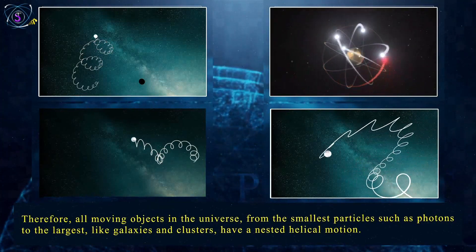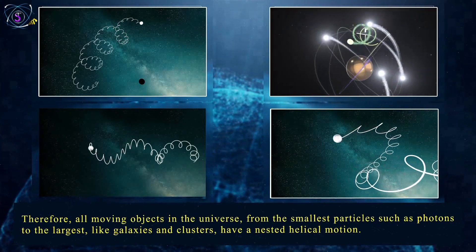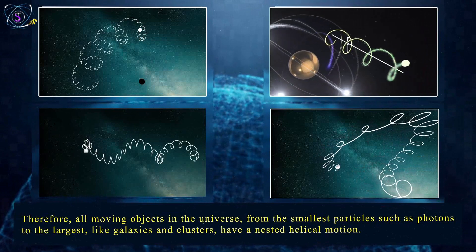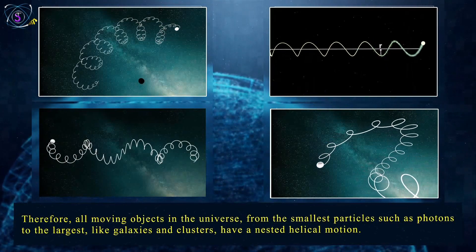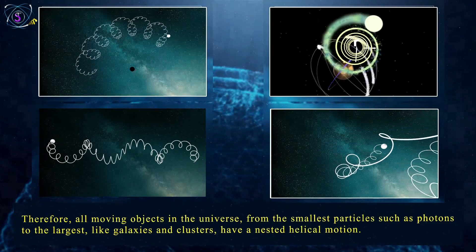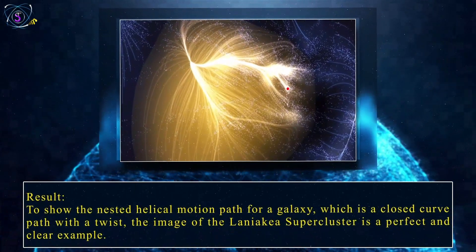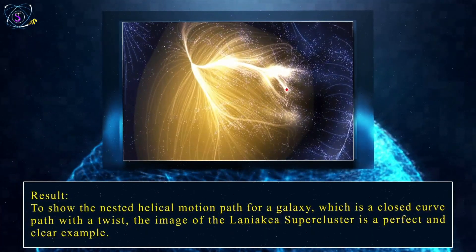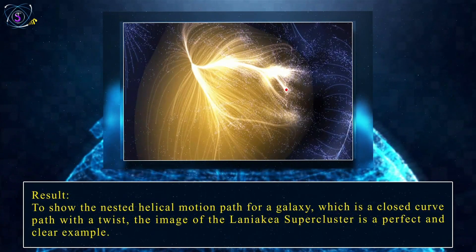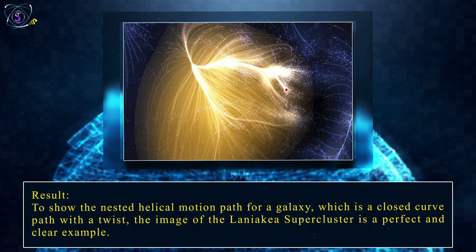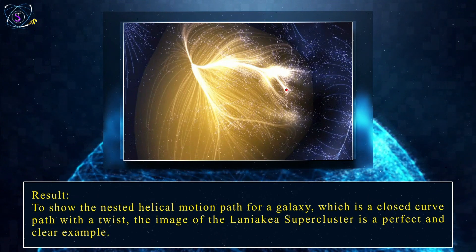Therefore, all moving objects in the universe — from the smallest particles such as photons to the largest galaxies and clusters — have a nested helical motion. To show the nested helical motion path for a galaxy, which is a closed-curved path with a twist, the image of the Laniakea supercluster is a perfect and clear example.